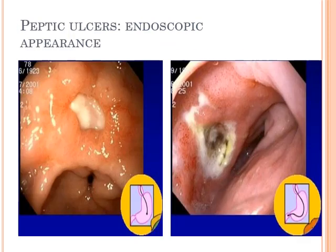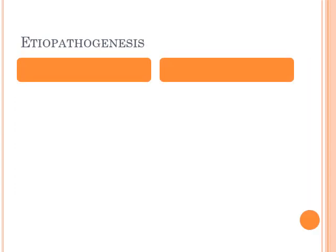Looking at the picture on the left, at the bottom you see the endoscope which has gone up to the stomach — this is the endoscopic picture of a gastric ulcer. On the right, the endoscope has gone up to the first part of the duodenum, so the picture on the right is that of a duodenal ulcer.